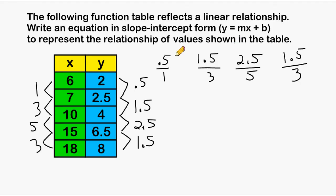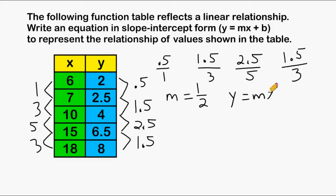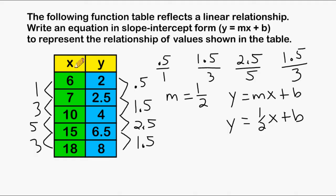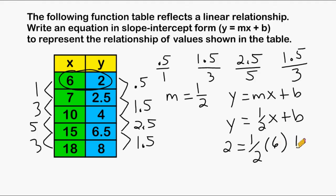Looking at all these ratios, we can see the numerator is exactly half of the denominator, which means our slope or m value is going to be equal to 1 half. So we take our slope-intercept formula y equals mx plus b and substitute 1 half in for our m value. To solve for the b value, we take a point from our function table — we plug in 2 for y and the corresponding x value of 6 for x.